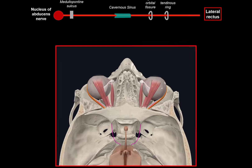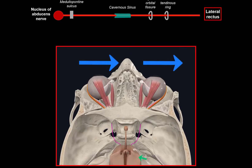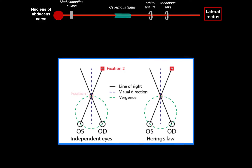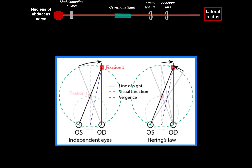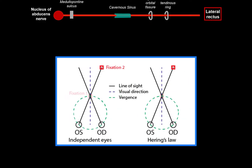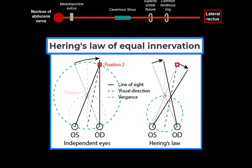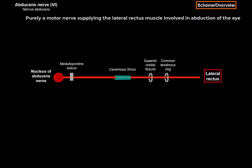The way this works is, imagine looking to the right. Signals from the right abducent nucleus travel through the abducent nerve, activating the lateral rectus muscle of the right eye. This causes the right eye to move outwards — a movement known as abduction. Naturally, you don't want the left abducent nerve to work at the same time. To maintain balanced eye movements and prevent double vision, we have Hering's Law of equal innervation — more on that later. That's the general outline of this nerve.